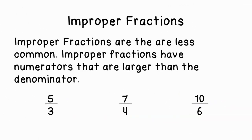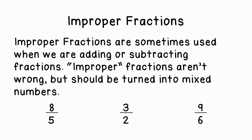Now improper fractions are less common, and they have numerators that are going to be larger than the denominator. You can see our examples here: five thirds, seven fourths, and ten sixths — in each case the numerator is larger than the denominator. Improper fractions are sometimes used when we're adding or subtracting fractions, but we don't want to leave them as improper fractions — we should turn them into mixed numbers.